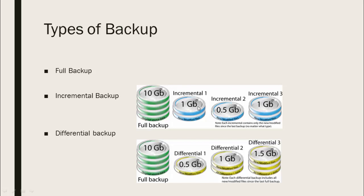After an incremental backup completes, it clears the archive bit — so it knows which folders do not need to be backed up next time; only folders with the archive bit set will be included. Differential backup does not clear the archive bit after each job — it only clears it after a full backup. So for differential backup, the archive bit is cleared only weekly when the full backup runs.